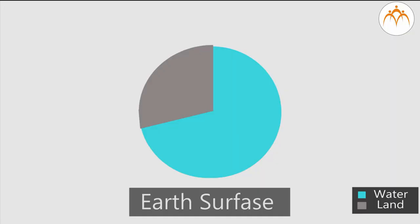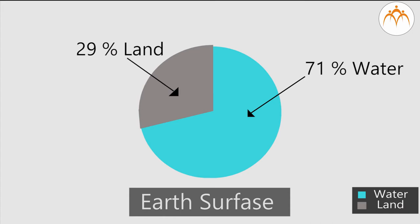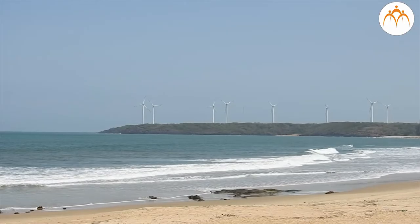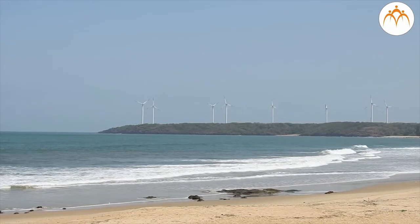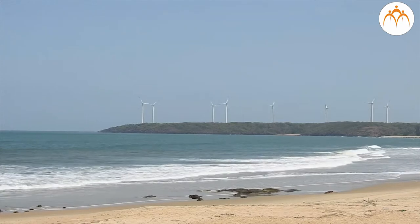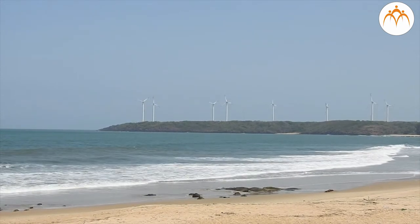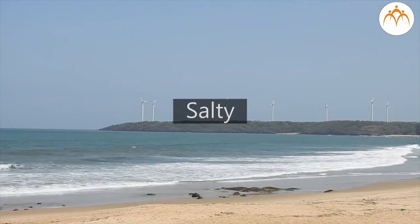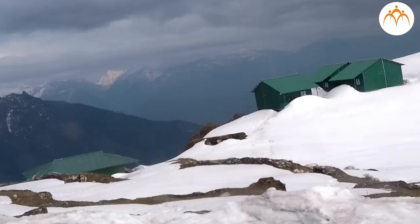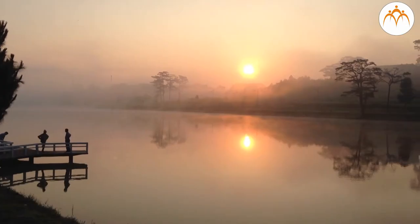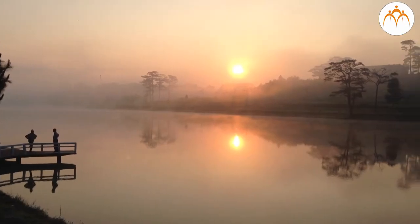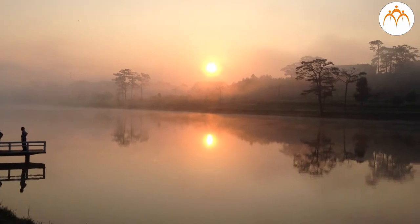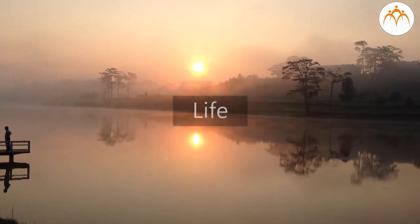On the face of the earth, we have 71% water and 29% land. Though water is available in such abundant quantity, the water in the oceans is salty and some part of the water is in the form of snow. So the actual water which is available to us for our uses is very less.